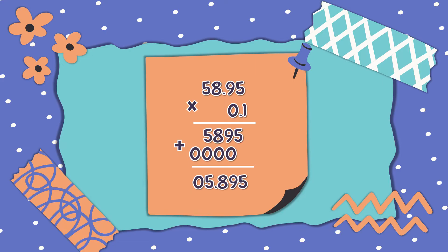Don't forget that you need to count all the decimal numbers to the right of the decimal point: 1, 2, 3 — and 1, 2, 3. So the answer is 5 and 895 thousandths.